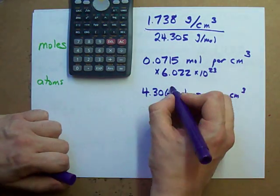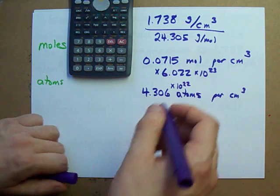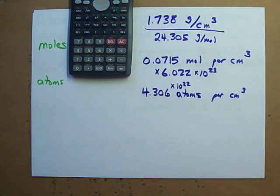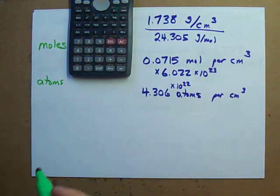That's now in atoms per centimeter cubed. 4.306 times 10 to the power of 22 atoms per centimeter cubed. If I know how many atoms I have in my cubic centimeter, I can figure out how many unit cells there are.